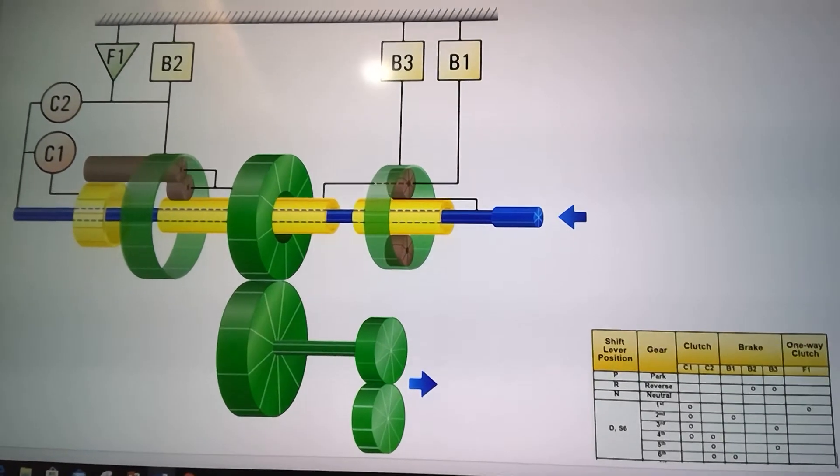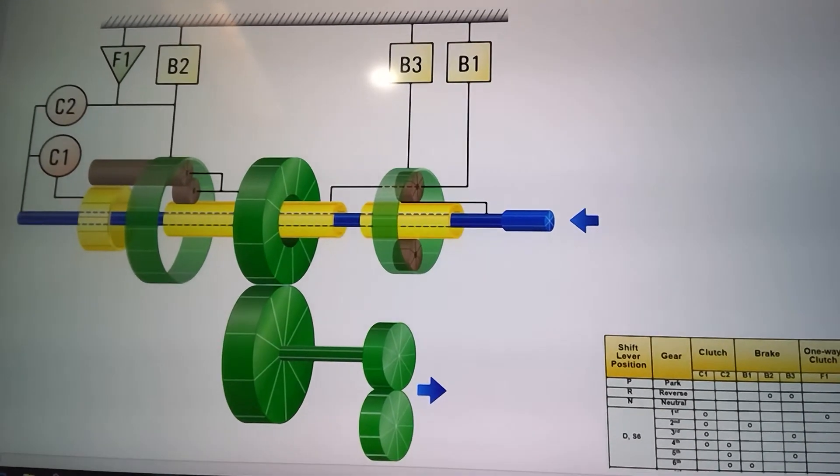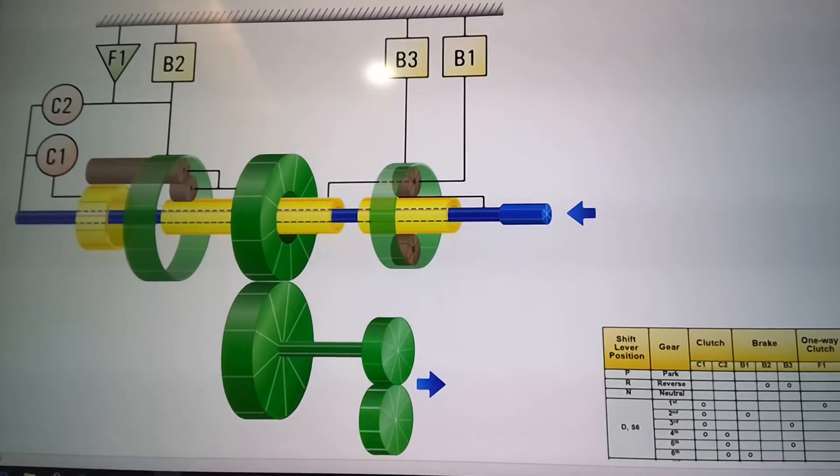Alright guys, we're going to do U660 Power Flow. As you can see, this is a 6-speed transmission that's been used since 2007.